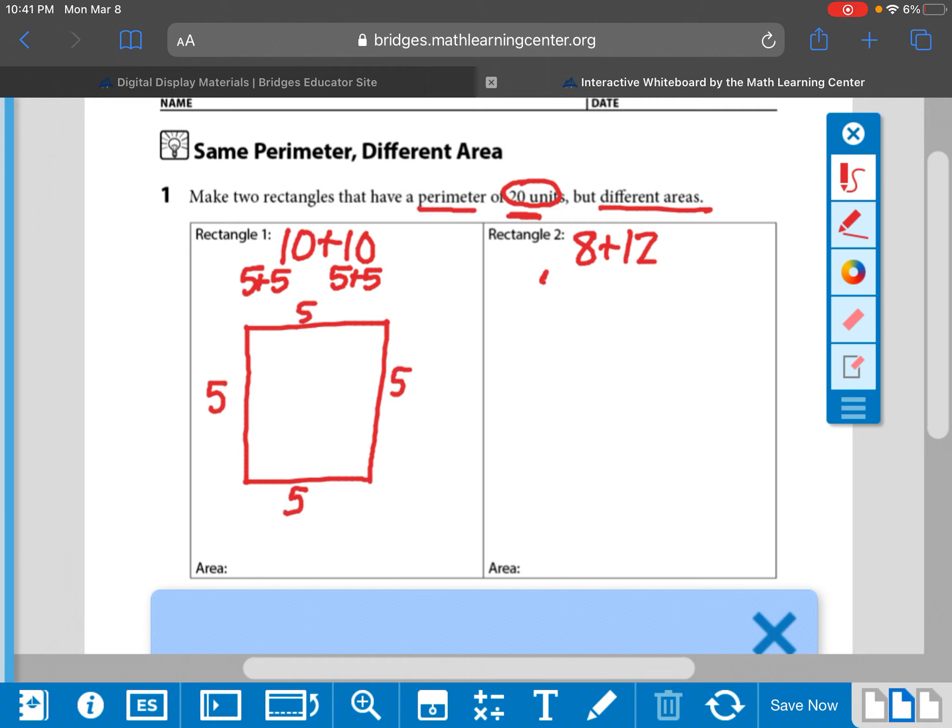And then over here we're going to have a 4 plus 4 and a 6 plus 6. So this is a true rectangle that also adds up to 20. So for the area, we're going to do 5 times 5.